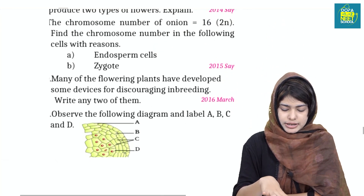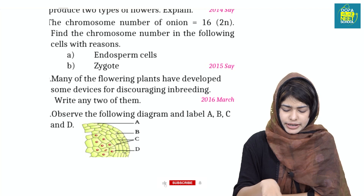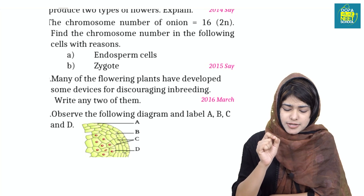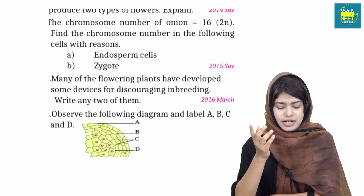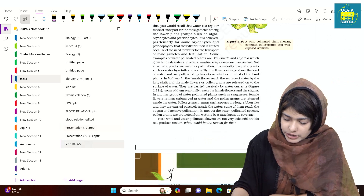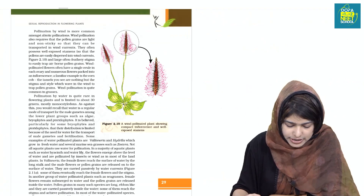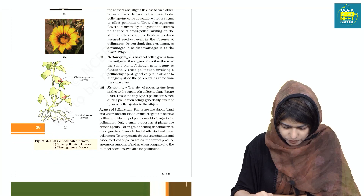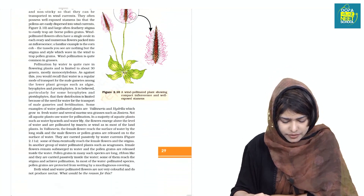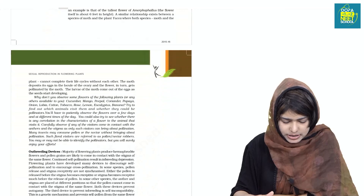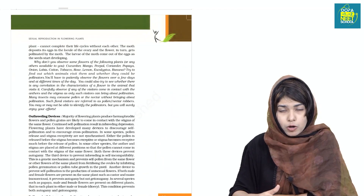We will explain the following diagram. The flowering plants have developed some devices for discouraging inbreeding. Write any two of them. We will learn how to do inbreeding.